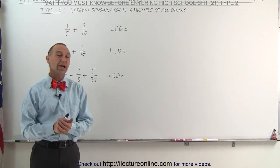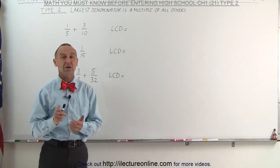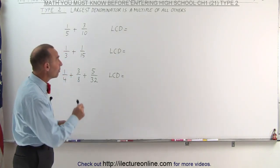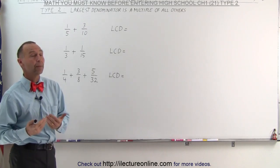Welcome to ElectronLine. When the denominators are not prime numbers, then look carefully and see if the largest of the denominators is a multiple of all the other denominators. Because if it is, that simply becomes the lowest common denominator.